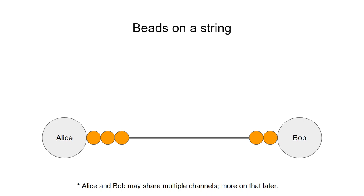Lightning Network is a network of payment channels. A payment channel is a two-party cryptographic protocol for fast Bitcoin payments. It can be visualized as beads on a string.